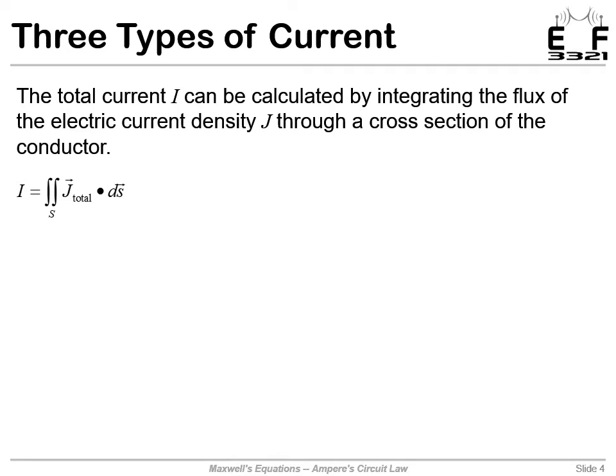Anytime we have a current, we'll have a circulating magnetic field. We can write our total current another way and do a surface integral of the current density. If we integrate that over the cross-section of the wire, we'll get our total current.